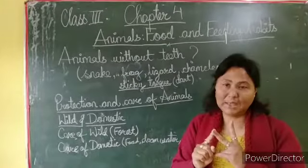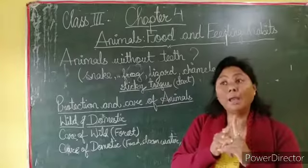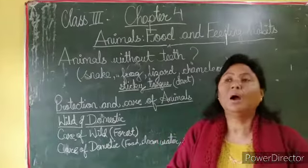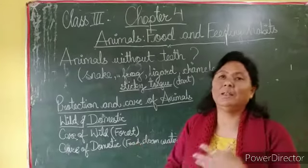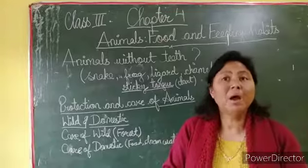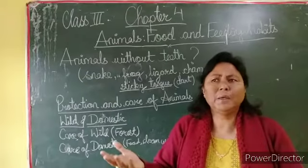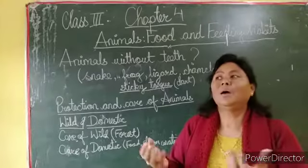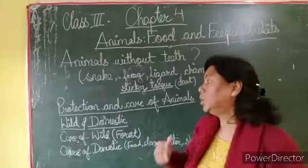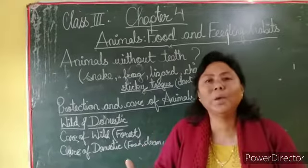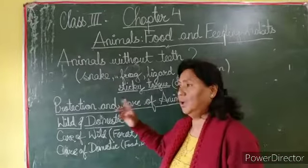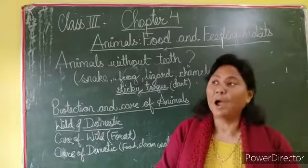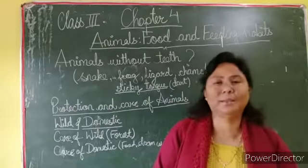Some animals we keep for our benefit - they give us milk, meat, and food. These are domestic animals. Some we keep as pets, like rabbits which are very playful, or dogs which guard the house. To protect wild animals, we should ensure we don't kill them. Hunters kill animals for their skin, tusks, or horns - like rhinos. This is not good. If we keep killing these animals, their numbers will keep decreasing.